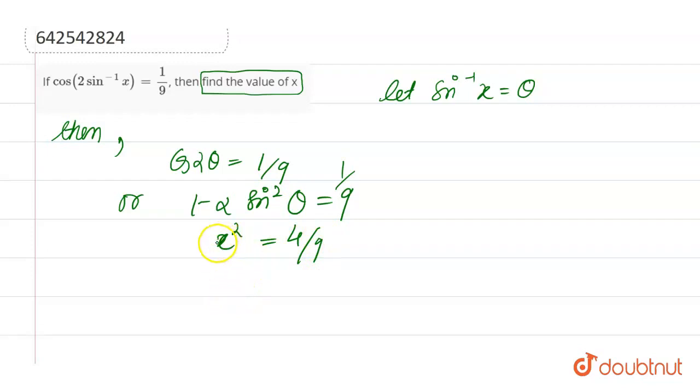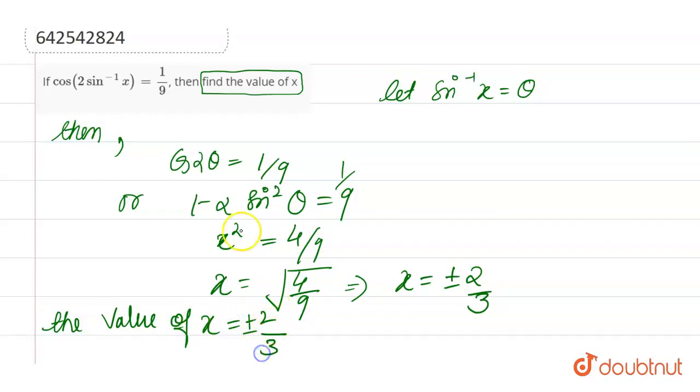So, taking the square root, we get x is equal to plus and minus 2 by 3. The final value of x is equal to plus and minus 2 by 3.